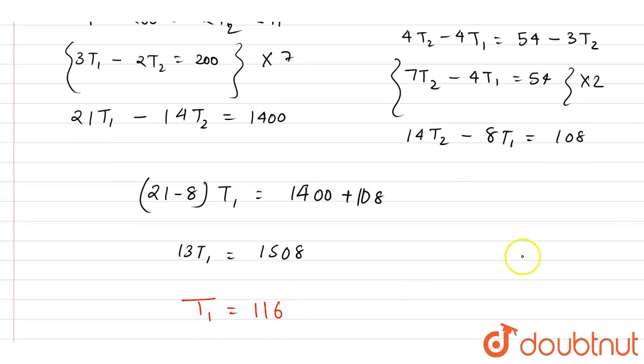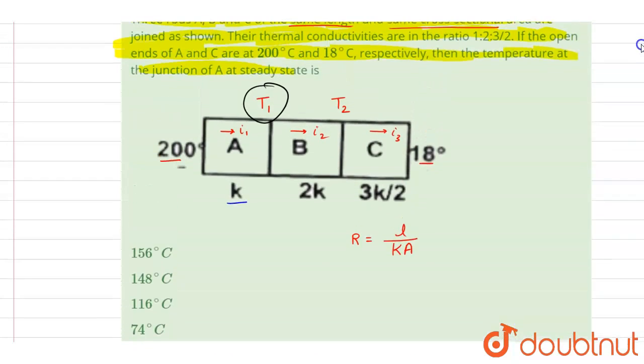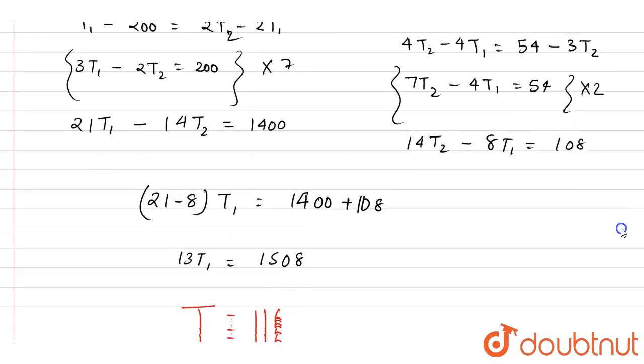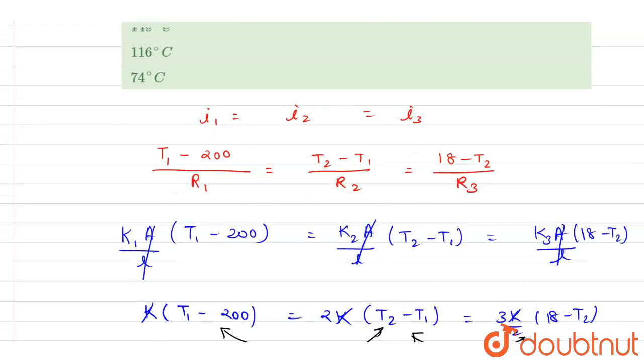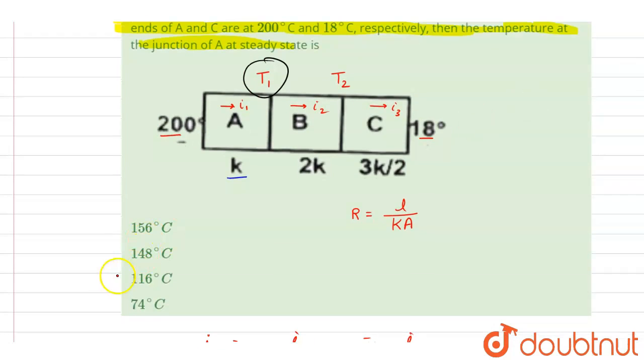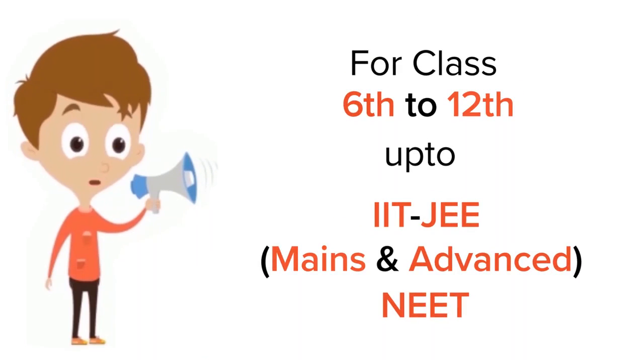And if you see the temperature was in Celsius, so this will be also in Celsius. Now you can check for the option here, so it is 116°C, is correct. Thank you. For class 6-12, IIT, JEE, and NEET level, trusted by more than 5 crore students, download Doubtnet app today.